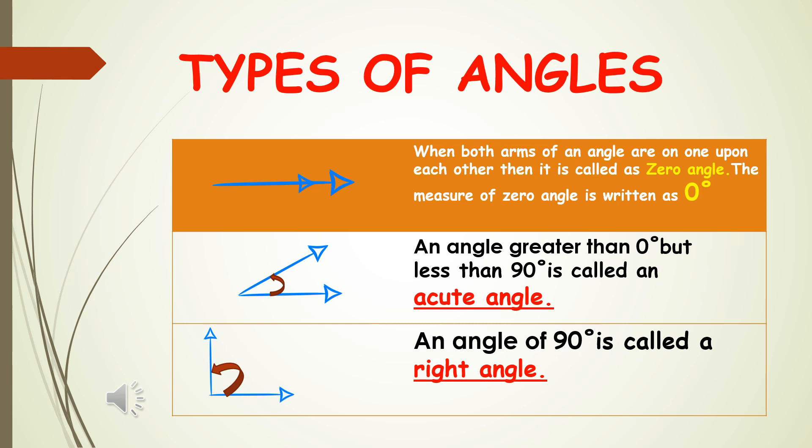Similarly, the next type is acute angle. An angle greater than zero degrees but less than 90 degrees is called an acute angle. Next, right angle: an angle of 90 degrees is called a right angle.